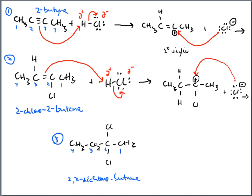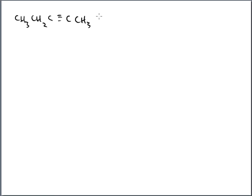Again, as a review of terms: the final product is a geminal dichloride — two chlorines sharing the same carbon, like Gemini twins. Now let's do a second example that's not symmetrical: CH3–CH2–C≡C–CH3, plus HCl with 'excess' written on the arrow. We want only the final product.